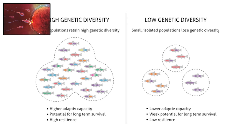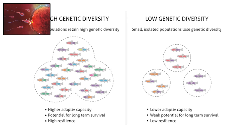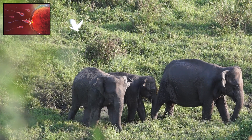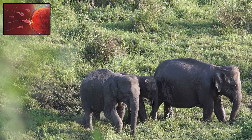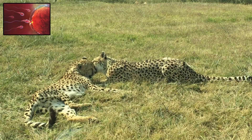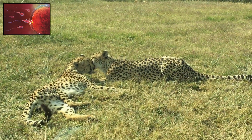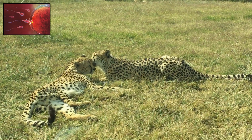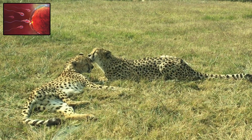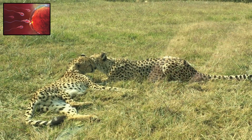The key advantage of sexual reproduction is genetic diversity. This constant shuffling of DNA allows populations to adapt more easily to changing environments. It helps organisms fight off disease, survive environmental stress, and avoid problems caused by harmful genetic mutations.